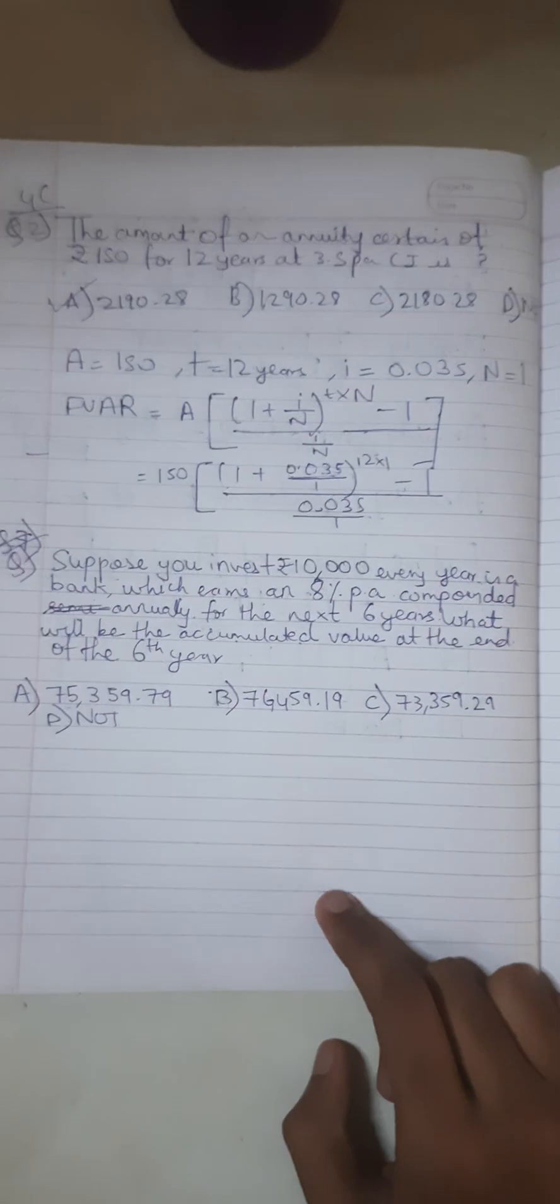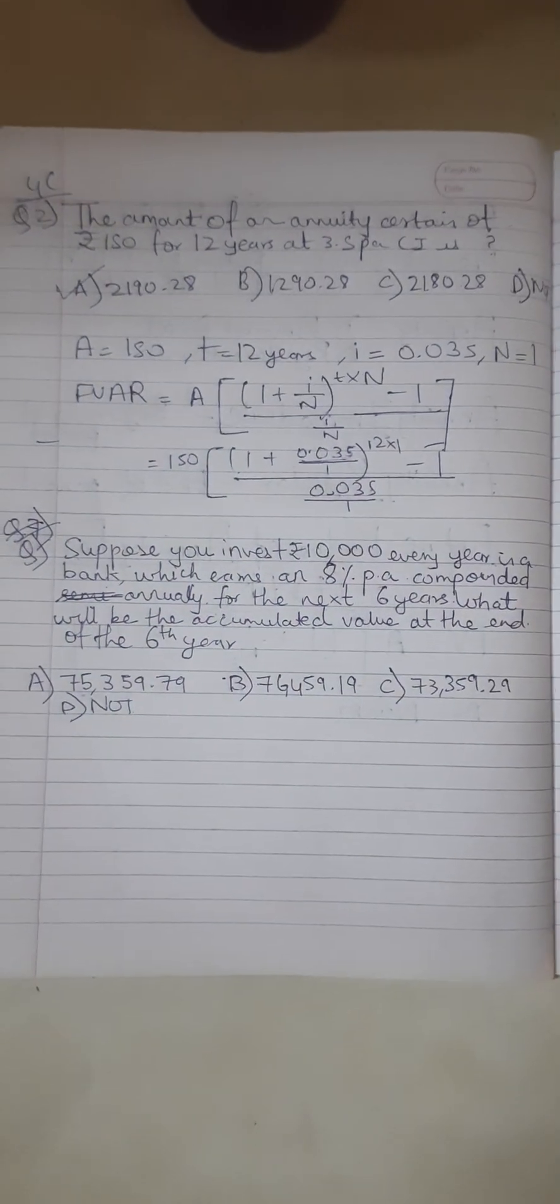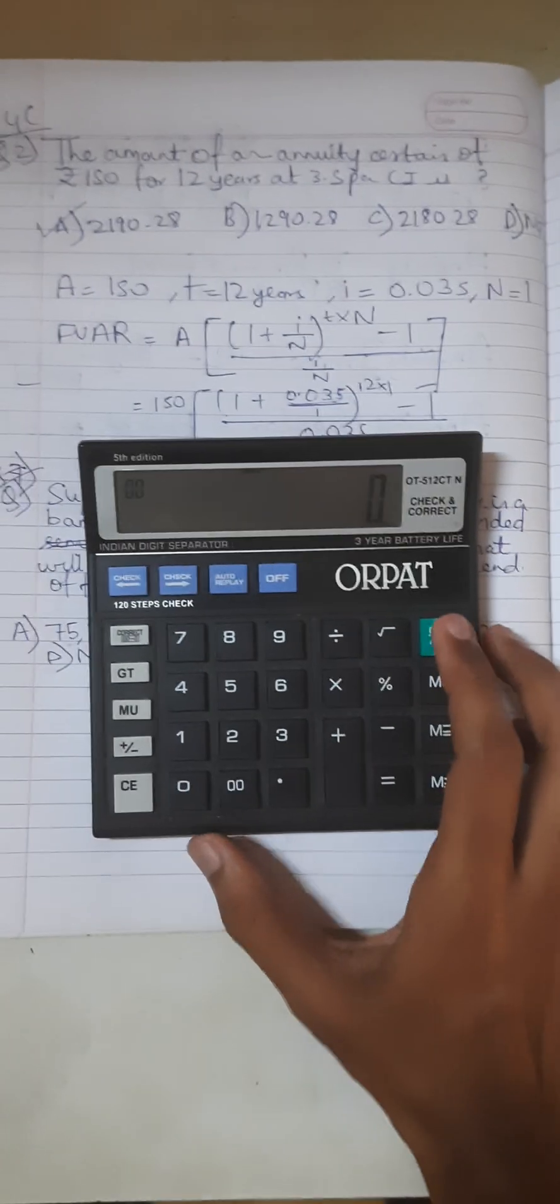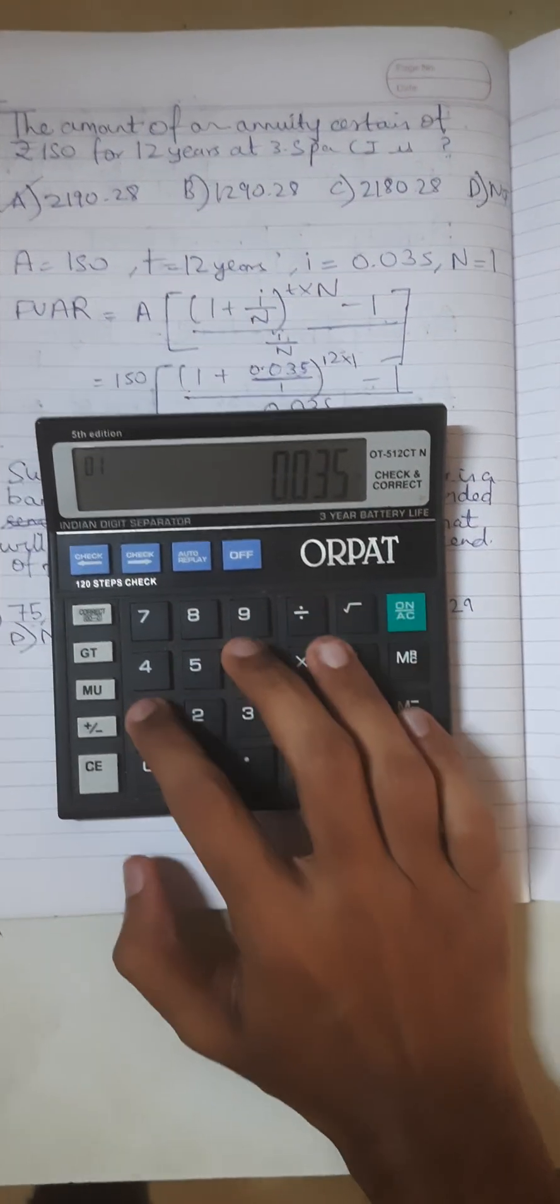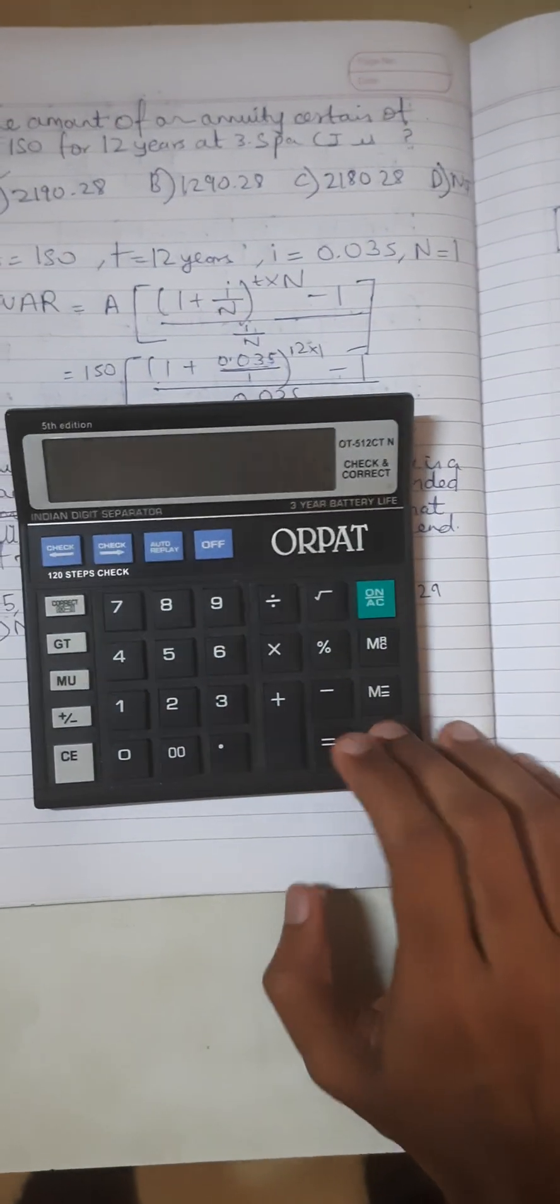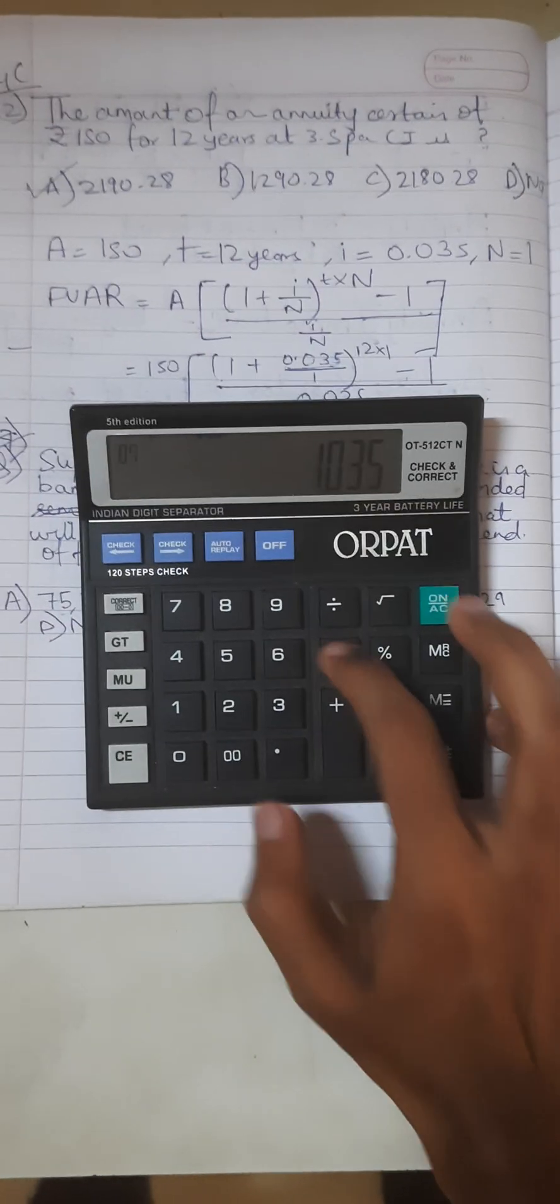This is the formula. So let's start. Since this is an annuity regular question, we first put the interest rate in decimals and put it in the memory, plus 1.